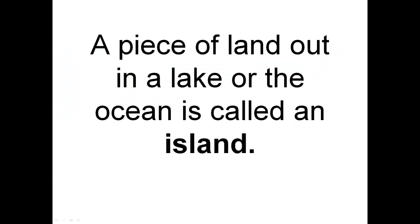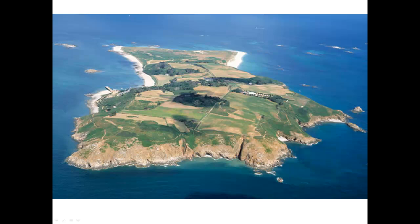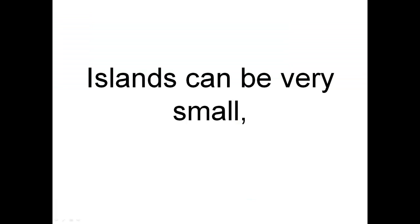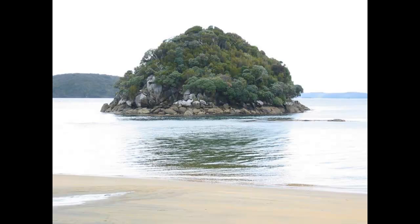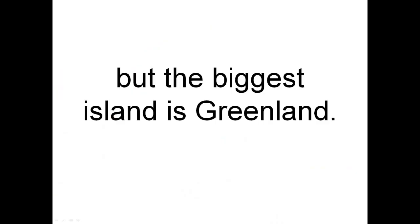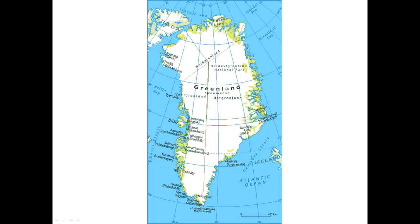A piece of land out in a lake or the ocean is called an island. Islands can be very small, but the biggest island is Greenland, which is huge.